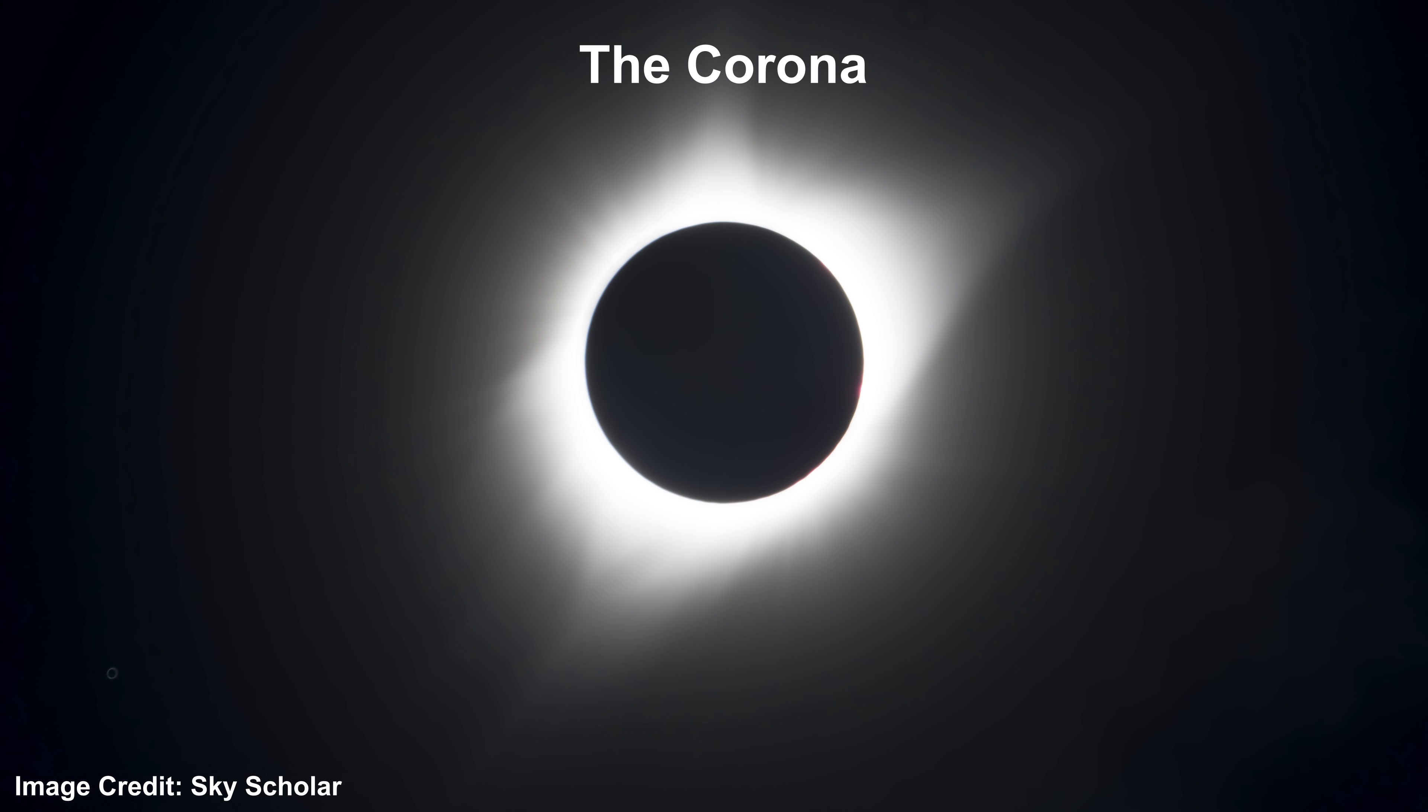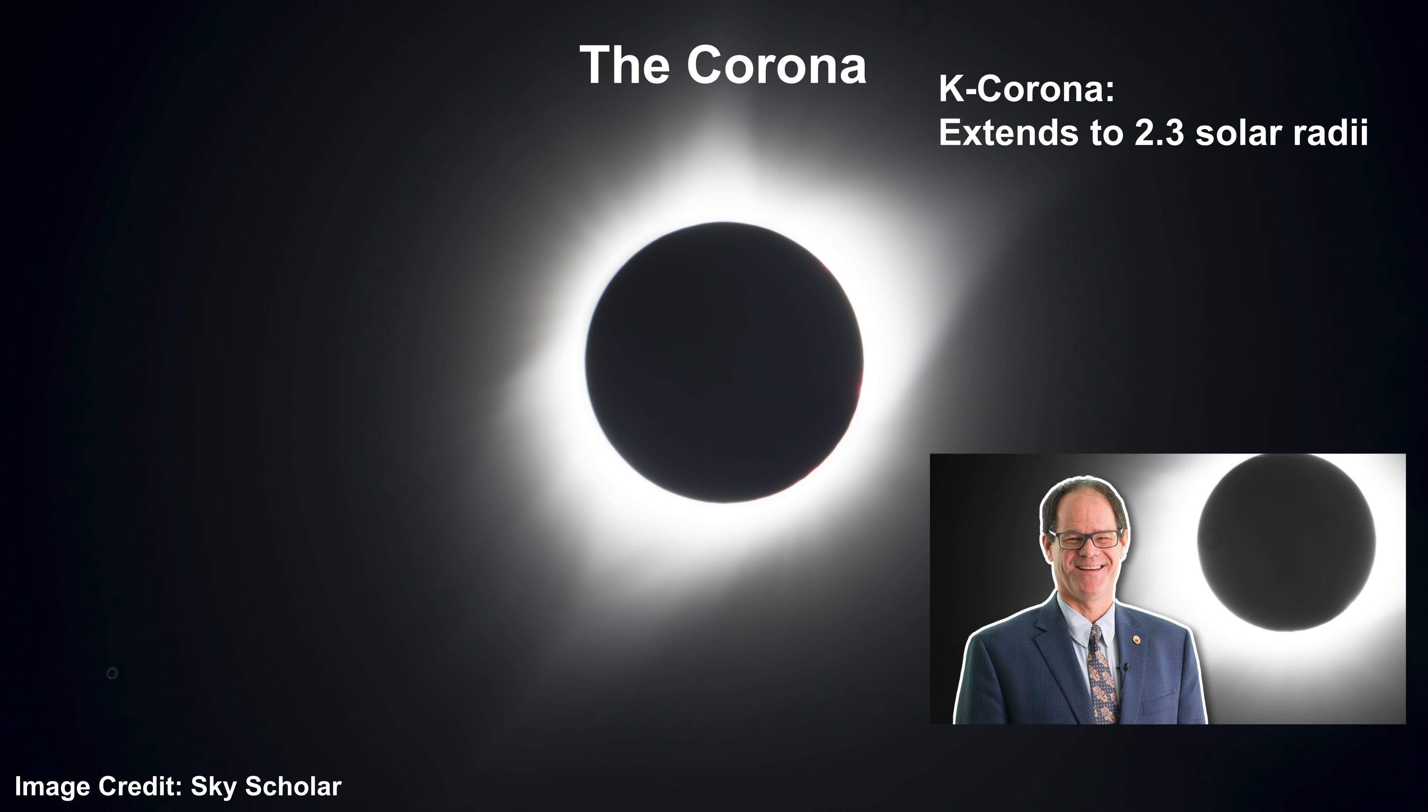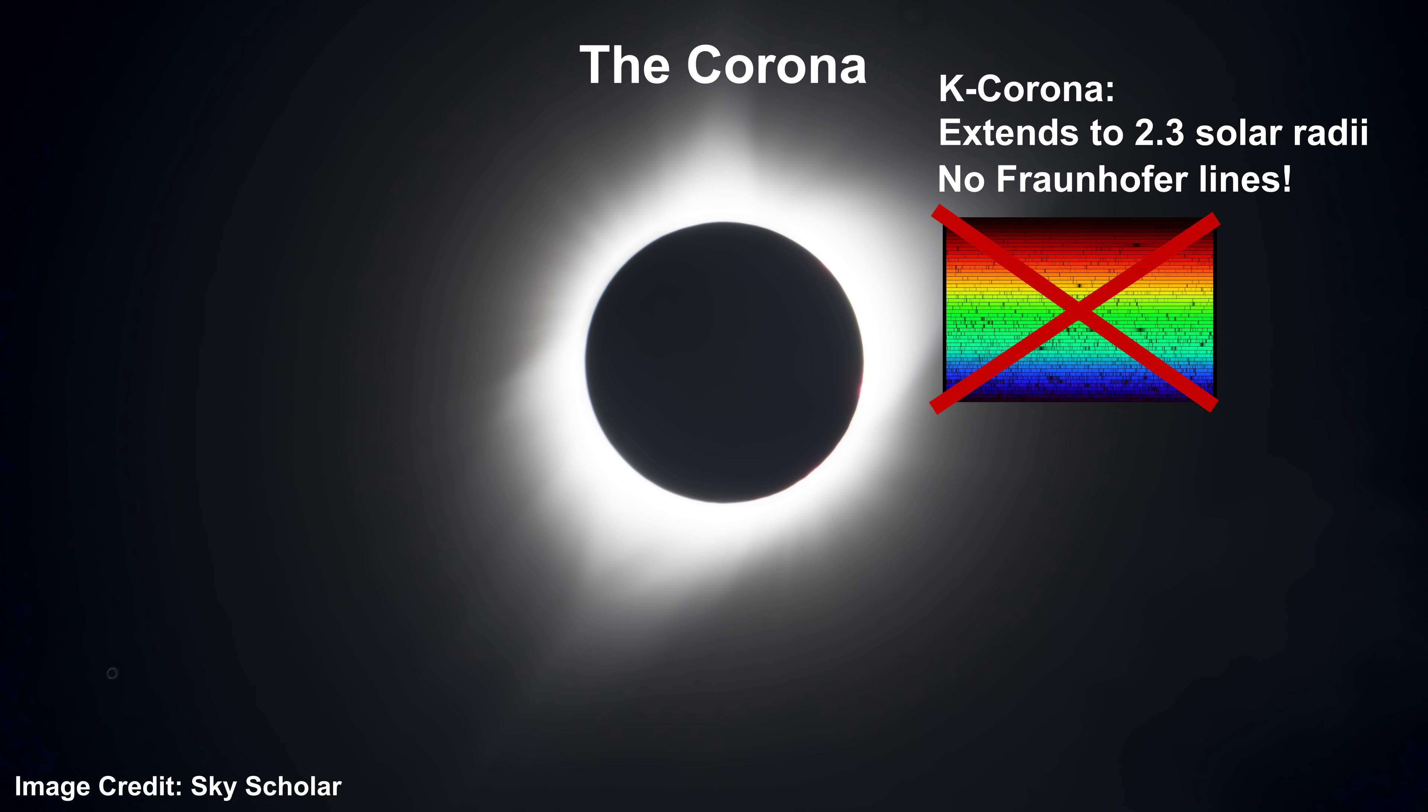Above the chromosphere is the corona which is seen as an awesome structure in eclipse photography. This region consists of type 1 metallic hydrogen which has escaped the solar surface. From the top of the chromosphere and dominating out to about 2.3 solar radii is the k-corona. This region produces its own polarized light as discussed in this video. Its spectrum lacks the Fraunhofer lines of the photosphere.